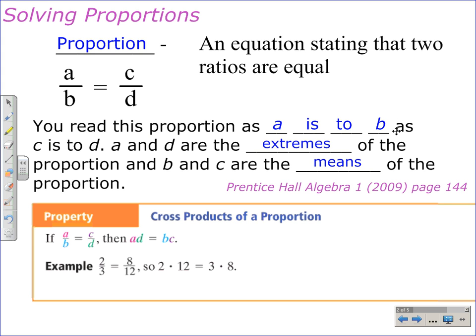Notice, instead of saying is, we say as, so as is acting as the equal sign here. A is to B as C is to D.